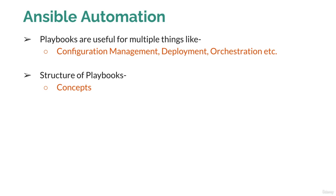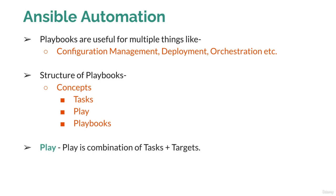Let's understand the structure of playbooks. A playbook has different components. First is the concepts: within the concepts you have tasks, plays, and playbooks. A play is a combination of task plus target — whenever you want to perform a task, such as installing a package, and you define on which particular target you want to install it, that combination is called a play. A task is a single operation the user wants to perform on the Ansible client.